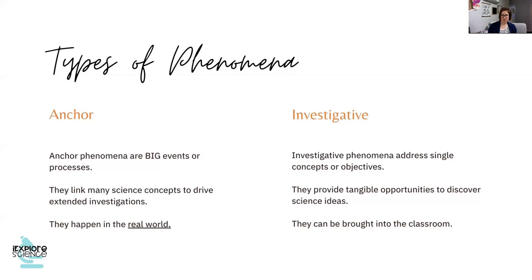So there are different types of phenomena. You have your anchor phenomena — these are those big events or processes that you're linking many science concepts to, to drive extended investigations, and they happen in the real world. If they happen in the natural world, they're happening in the real world. It is not those fast plants you bring into the classroom to manipulate in a lab. It is rather the plants that are growing outside in the fields or the plants growing in their parents' garden.